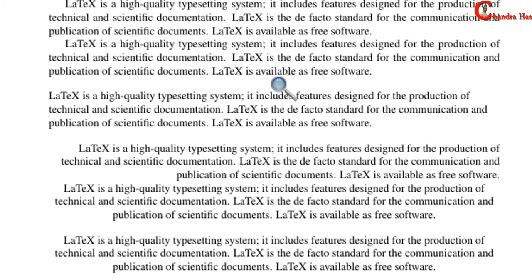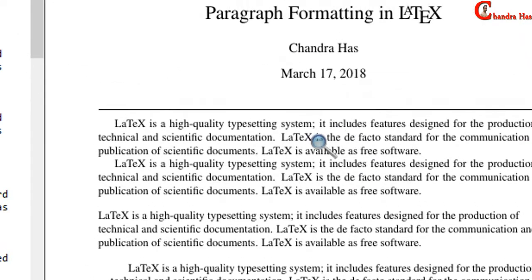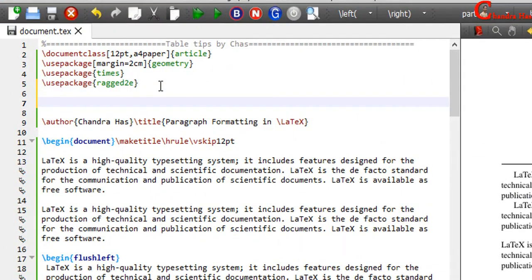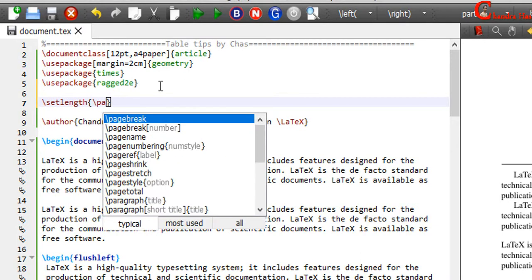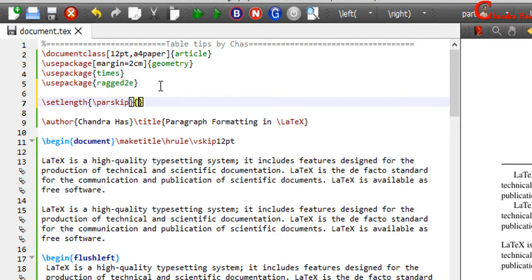Two more things I would like to explain here. At this place I want to increase the spacing between each paragraph. The default is 0pt. We can increase or decrease it using the setlength and parskip commands. Just use backslash setlength with parskip. I want to use 5pt.